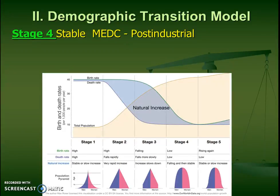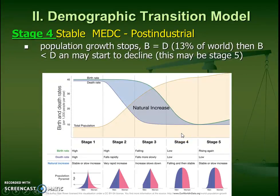The fourth stage we consider a stable MEDC. This is where the US is considered, versus stage three which describes some parts of China and India. In stage four, we're really going to start considering the place an MEDC. Population growth is still learning to stop. It might continue to increase, like the US, because of immigration. Birth rate and death rates start to equal out, and they might even start to decline as we head to stage five.